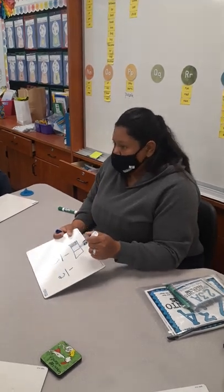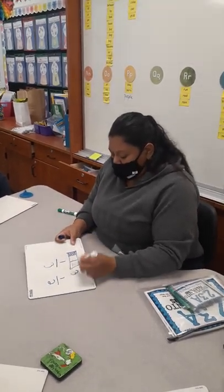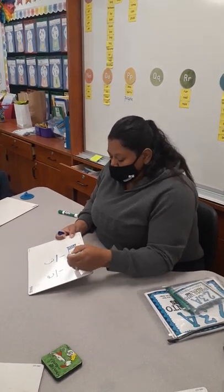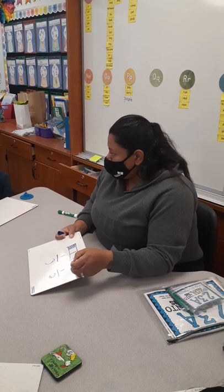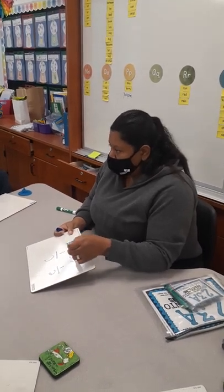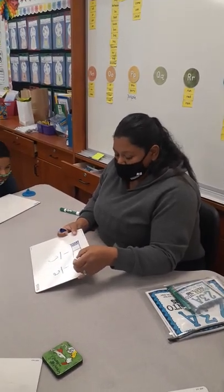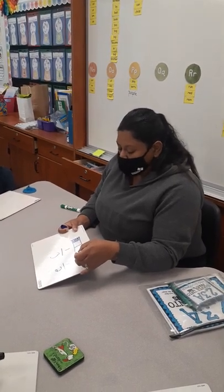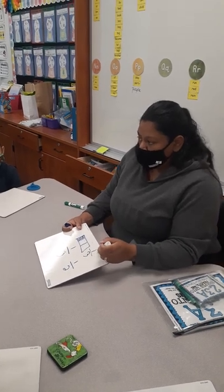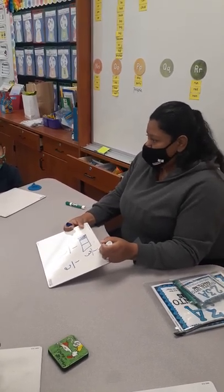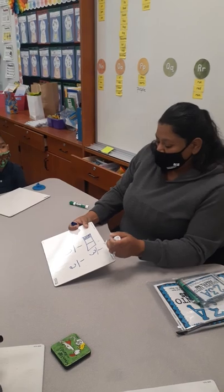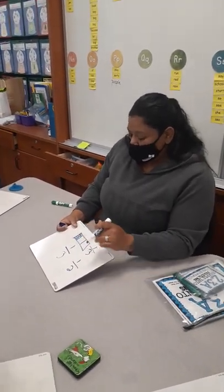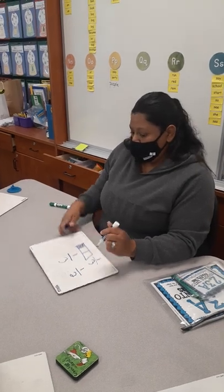Nicole: all three. And how many is shaded? So remember, what goes on the bottom? How many total equal parts — the partitions, right? And what goes on the top? Shaded. Sometimes it will be the unshaded, but in this situation it's going to be the shaded.